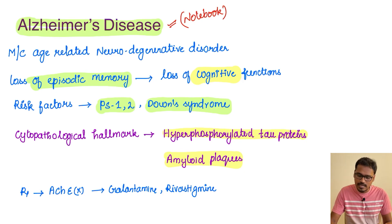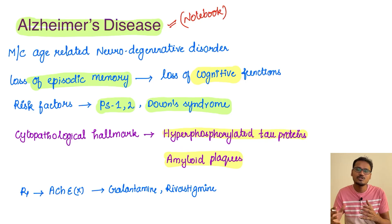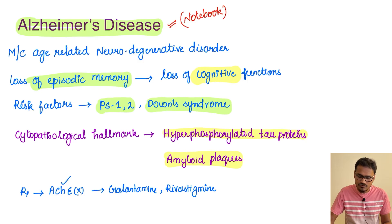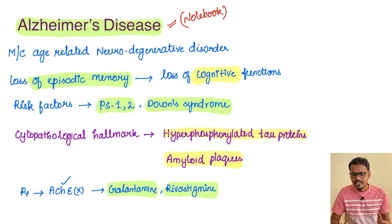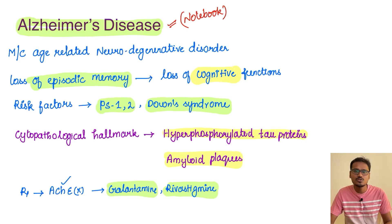The treatment for Alzheimer's disease starts with prevention — keep the brain active as much as possible. For treatment, there are drugs called acetylcholinesterase inhibitors, the most important being galantamine and rivastigmine. We will study numerous drugs in pharmacology, but these are the two most important. Thank you for watching the video. If you like the content, subscribe to the channel and share it with your friends.